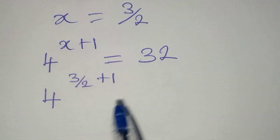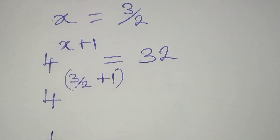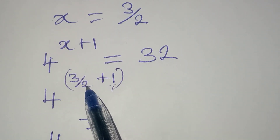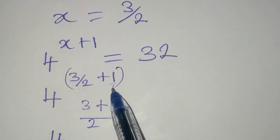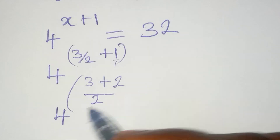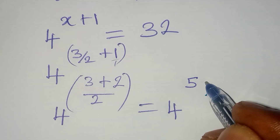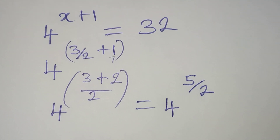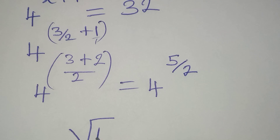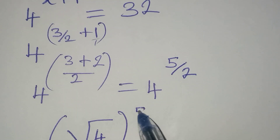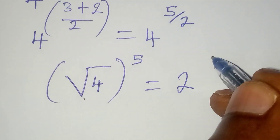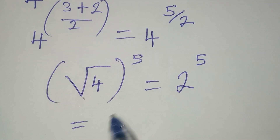Now 4 to the power of 3 over 2 — let me deal with this separately. The LCM of the exponent is 2. Remember 3 over 2 plus 1, where 1 is over 1: 2 divided by 2 is 1 times 3 is 3, plus 2 divided by 1 times 1 is 2, giving us 5 over 2. So we have 4 to the power of 5 over 2. This means we are looking for the square root of 4 raised to the power of 5. The square root of 4 is 2, raised to the power of 5, which gives us 32.